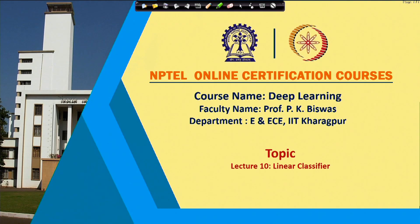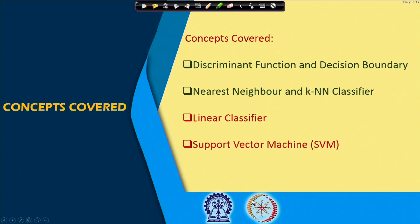Hello, welcome to the NPTEL online certification course on deep learning. In our previous class, we recapitulated the discriminant function and the decision boundary. We talked about the nearest neighbor and K nearest neighbor (KNN) classifier, and we had started our discussion on linear classifier.